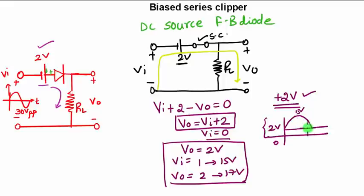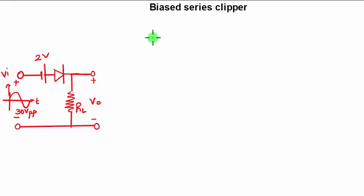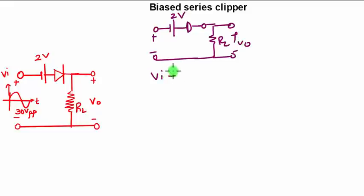Now what will happen in the negative half cycle? In the negative half cycle, the circuit will look the same. You have the diode which will be initially short circuited because 2 volts is greater than the negative supply, the load resistance RL, and the output voltage. I am using the same equation.